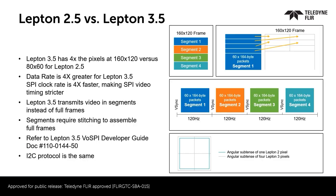Lepton 3.5 is 160 by 120 pixels, while Lepton 2.5 is 80 by 60 pixels. This creates four times the data rate and additional requirements for integration. Refer to the Lepton 3.5 VOSPI developer guide for additional information.